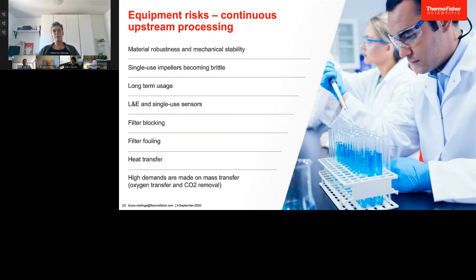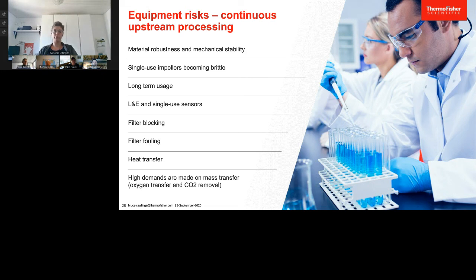I would like to highlight all the equipment risks identified by the DECHEMA group for continuous upstream processing. Not all risks apply to the same probability and to the same supplier — this is a general overview of potential risks. In continuously operated single-use bioreactors, a critical point is material robustness and mechanical stability. For example, plastic layers of single-use impellers can become brittle and prone to breakage during long process times. The long-term usage of single-use equipment is identified as the main reason, as single-use equipment was originally designed for batch or fed-batch processes with a duration of 7 to 21 days.